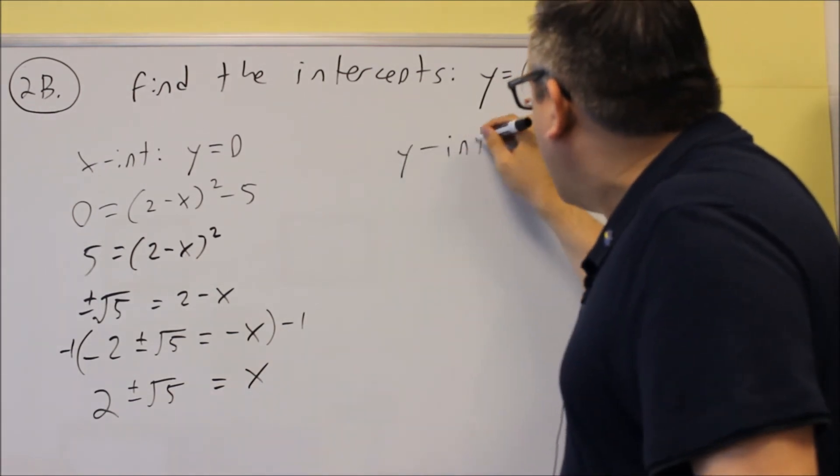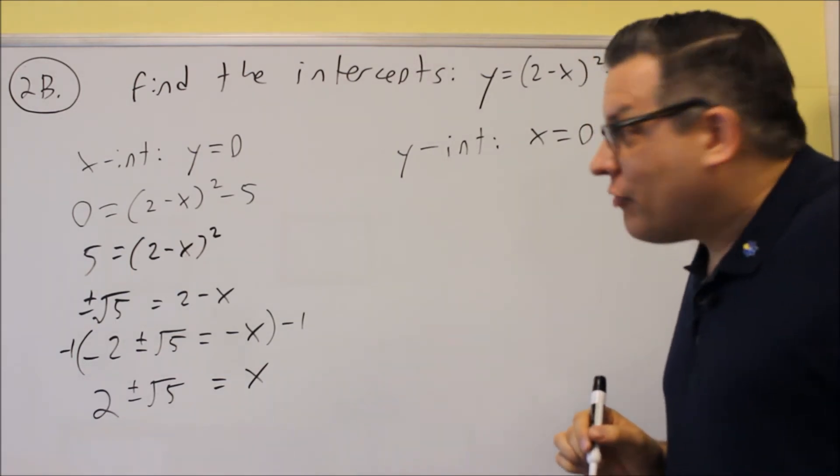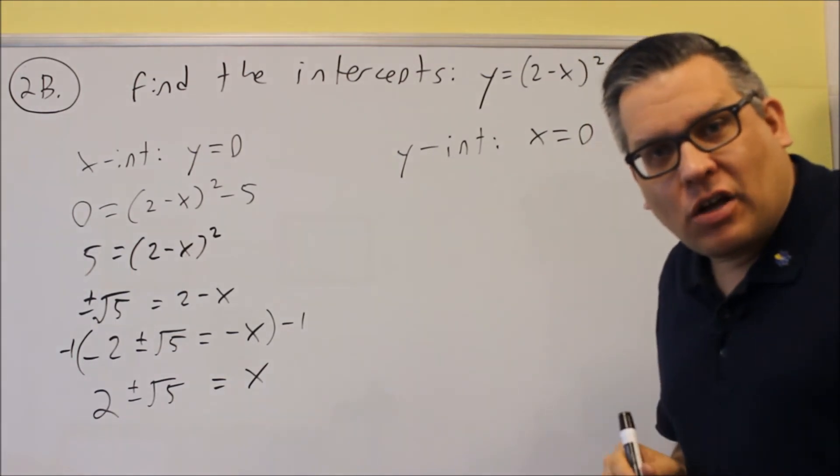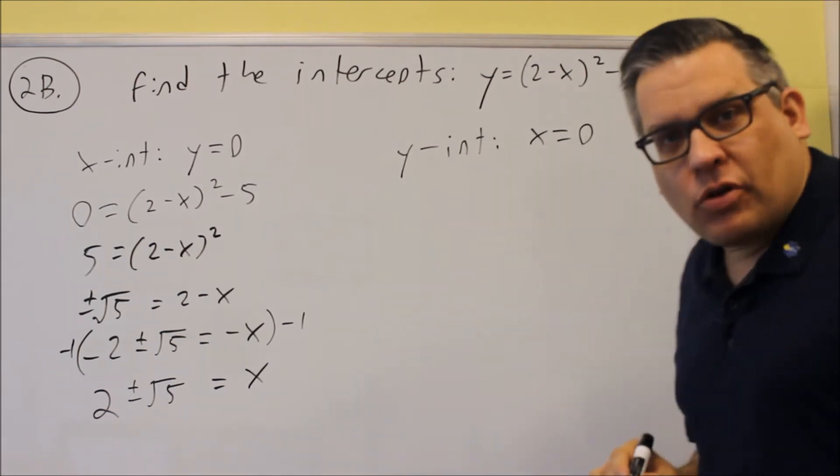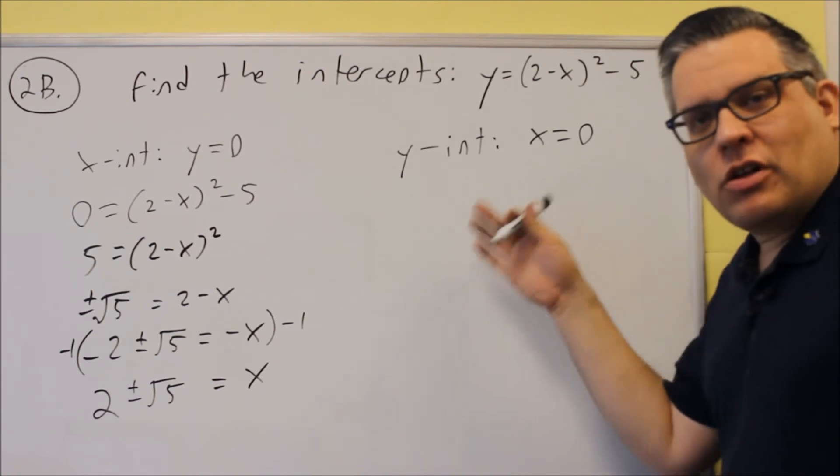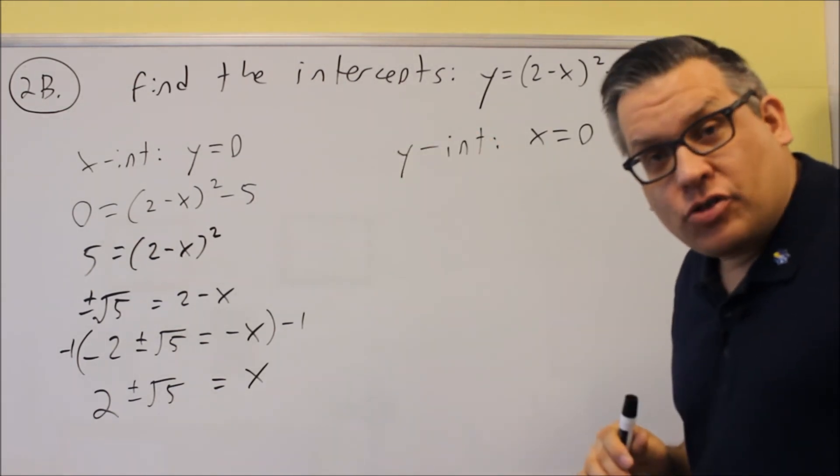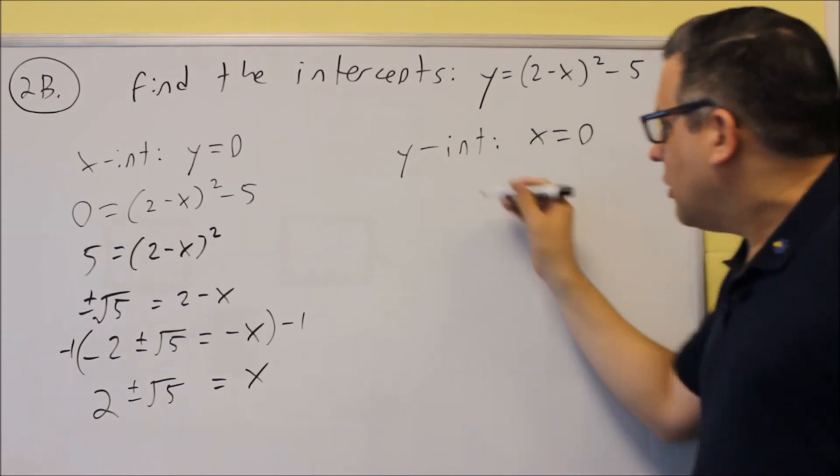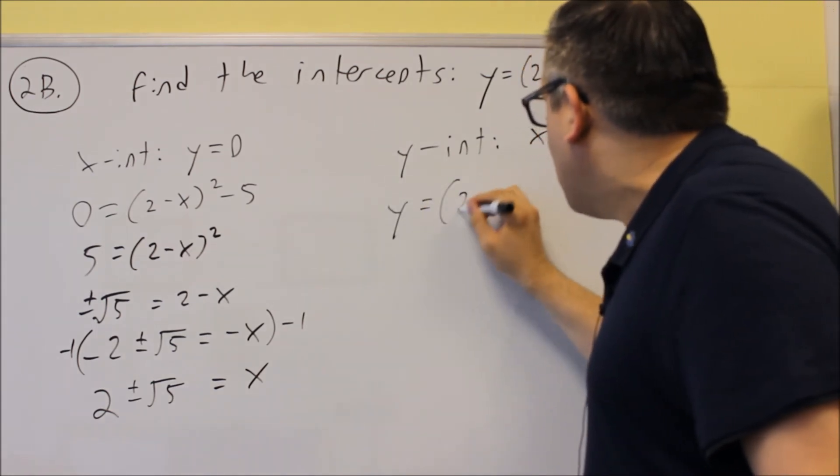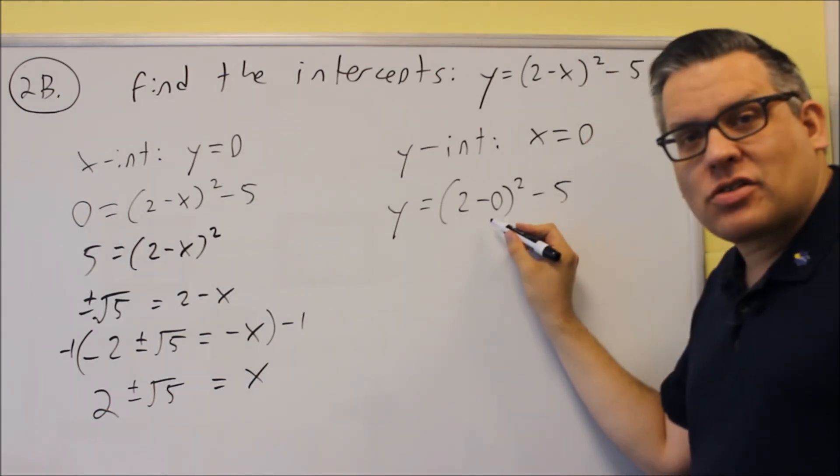If we do y-intercept, we do the same process. We put a 0 in for x. Now, a common mistake here is to automatically assume that the last number there is going to be your y-intercept. That's true if it's written in the form with three terms like we had for 2a. But for this one, be careful. Just put it in like you would normally do. So if you put a 0 in for x...